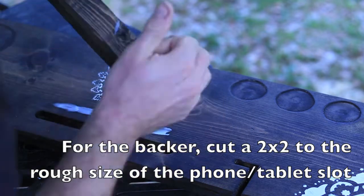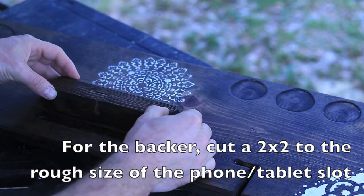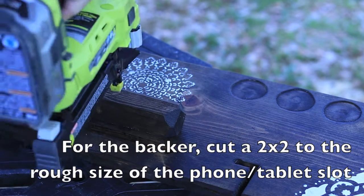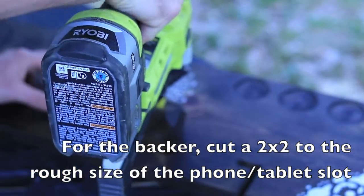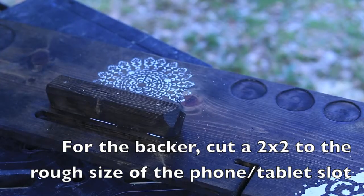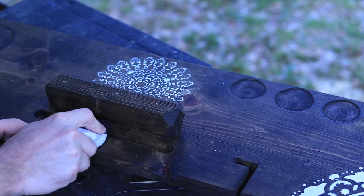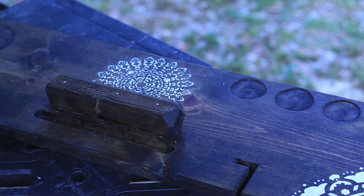To put the phone backer on, all you do is throw some wood glue down, make sure you got it in the right place so that it's got a good angle for the phone to rest on, and then shoot some two inch brad nails through to hold it in place while the glue dries. If you have any glue squeeze out, just take a damp rag and wipe it off.